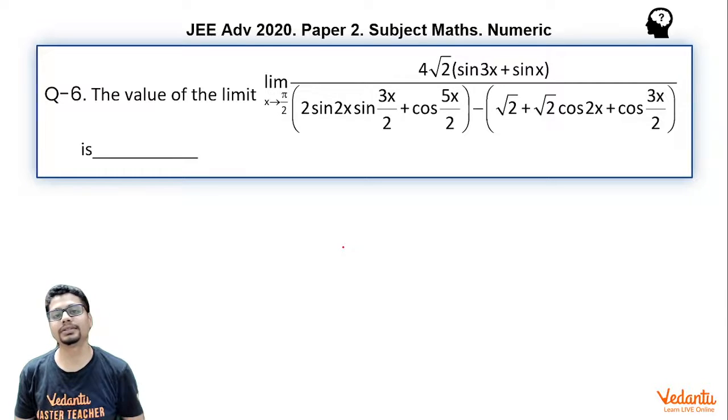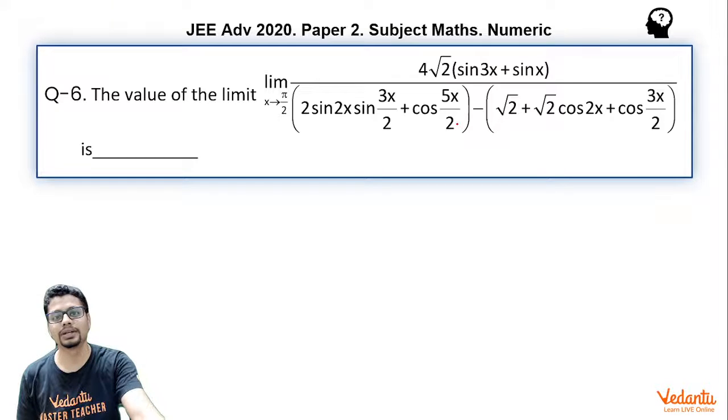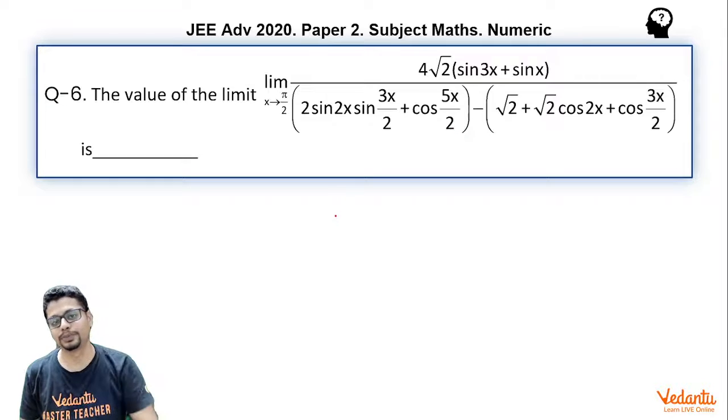This is a single digit integer type question. Let's solve it. As you look at the numerator and denominator and as x is tending to π/2, you will find both are tending to 0 and you may be tempted to use L'Hopital. Now if you use L'Hopital, you would end up using it twice. So what we will see is a method which involves general trigonometric transformation and using general trigonometric formulas. Let's proceed.